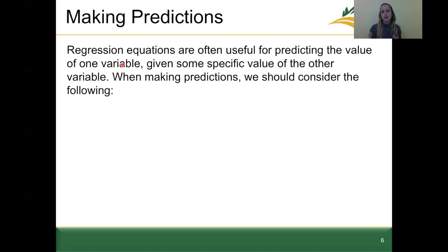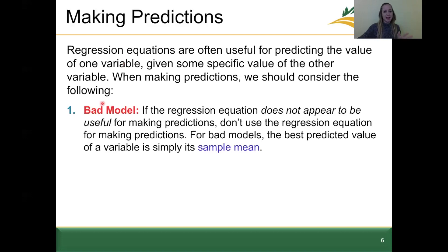Before proceeding with predictions, we need to consider the following. First, if we have a bad model — meaning the regression equation does not appear to be useful for making predictions — then we don't use it. Instead, for bad models the predicted value of a variable is simply the sample mean, y-bar. Rather than using that regression line, we use the sample mean.